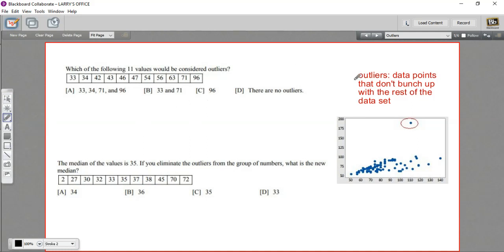In these problems, we're talking about outliers in a data set. Outliers are points of data that don't seem to fit with the rest of the group. For example, in this graph here, we have a bunch of data points on the y-axis that bunch up between 50 and 100, and then there's this guy up here almost at 200.